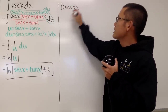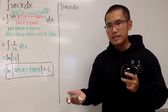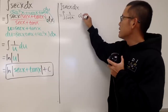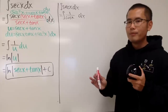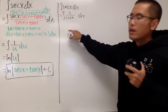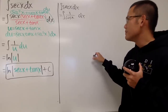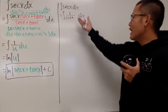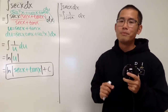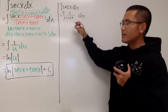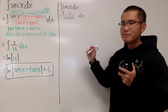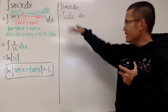Let's look at the integral of secant x dx. First, we know secant equals 1 over cosine, so we write the integral of 1 over cosine x dx. Now we have a problem — if we let u equal cosine x, its derivative is negative sine x, and we don't have a sine x factor to help us. When doing integrals, sometimes more is better.